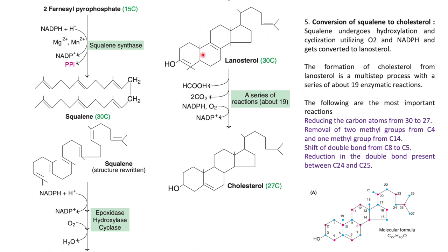The half-cyclic form of squalene is converted into the cyclic form using enzymes — epoxidase, hydroxylase, and cyclase — to give lanosterol, a 30-carbon unit. Then a series of about 19 reactions convert lanosterol to cholesterol, a 27-carbon unit. This involves removal of two methyl groups from C4 and one methyl group from C14.